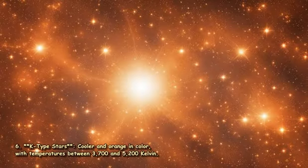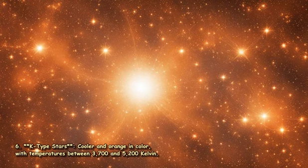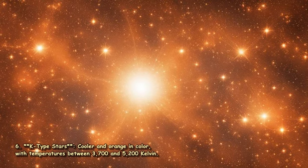6. K-type stars: Cooler and orange in color, with temperatures between 3,700 and 5,200 Kelvin.